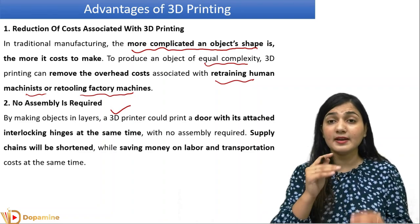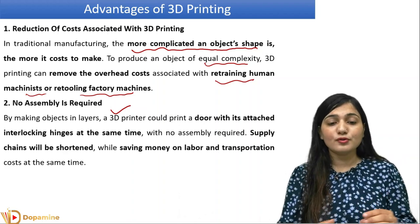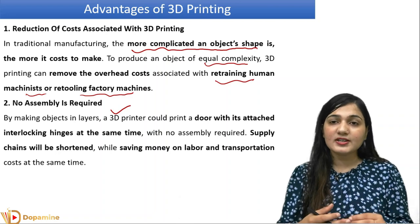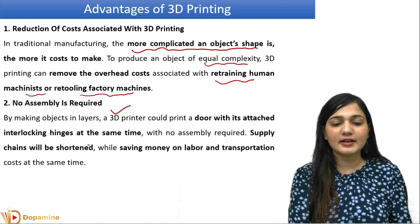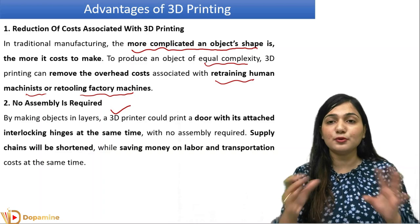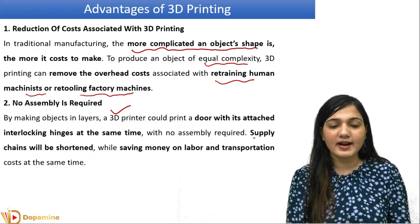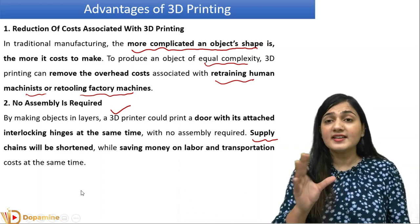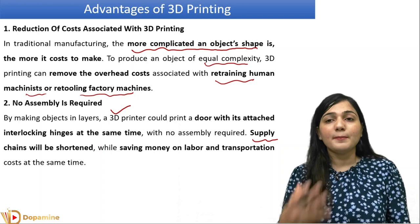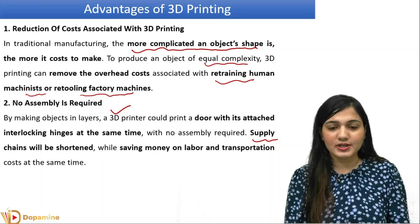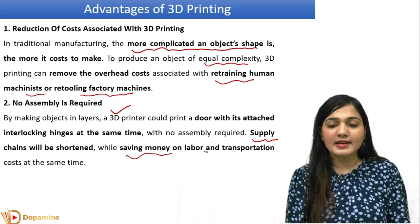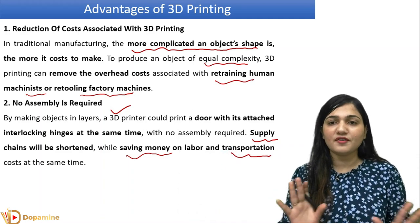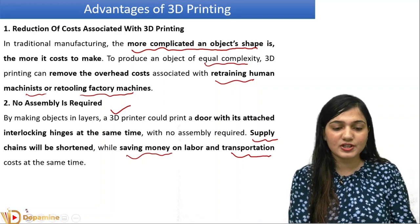Let's take a door example. The door structure and its interlocking hinge are made at the same place at the same time. In traditional manufacturing, the door is made separately and its interlocking hinge is made separately, and then we do the assembly. In 3D printing, this is not required. From this, the supply chain is shortened. If the supply chain is small, the cost of fabrication is reduced, and we can save money, labor, and transportation costs because the product doesn't have to move from one factory to another.